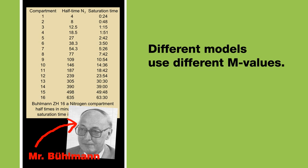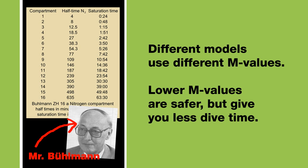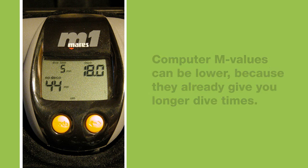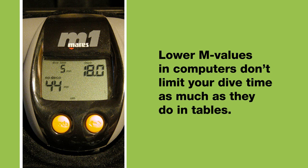Different models use different M values. Lower M values are safer, but they give you less dive time. Low M values are usually called Bühlmann limits. Computers often use Bühlmann limits because they give you longer dive times already — they use the real dive profile instead of assuming the maximum depth during the whole dive. Lower M values do not limit your dive time as much when used with computers as they would with tables.